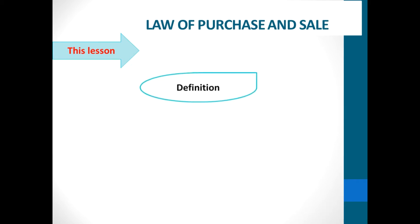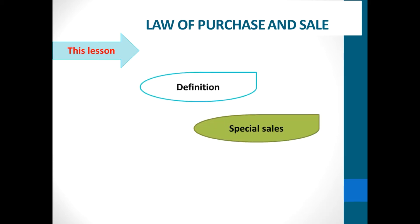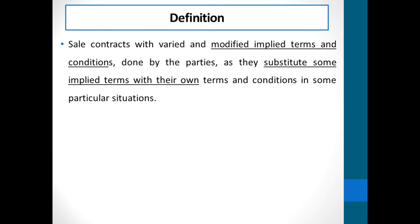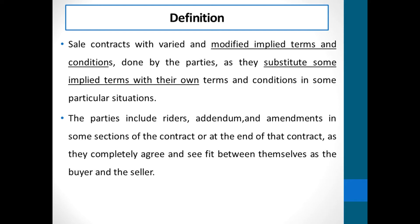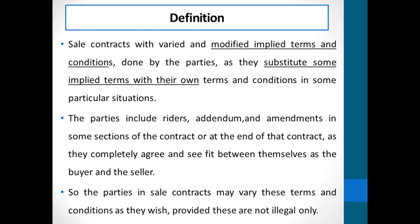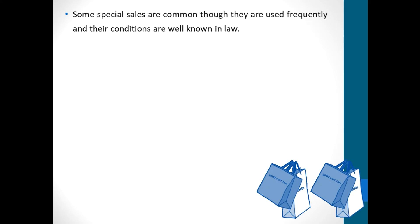In this lesson, we'll look at the definition, then the special sales we have, and at the end of the lesson, I'll give you popular exam questions relating to this lesson. First, the definition. A special sale is a sale contract with varied and modified implied terms and conditions done by the parties as they substitute some implied terms with their own terms and conditions in some particular situations. The parties include riders and amendments in some sections of the contract, or at the end of that contract, as they completely agree and see fit between themselves as the buyer and the seller. The parties in sale contracts may vary these terms and conditions as they wish, provided these are not illegal. Some special sales are common, though — they are used frequently and their conditions are now well known in law.